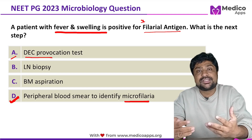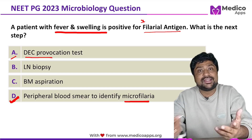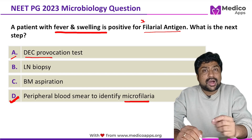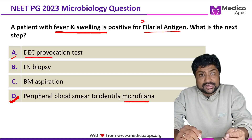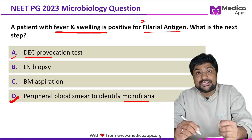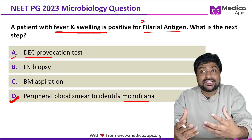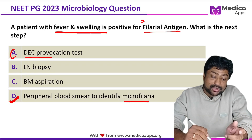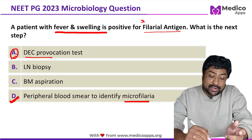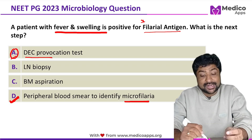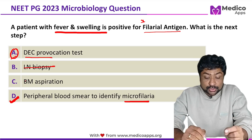Now we have much more sensitive and specific antigen tests, so DEC provocation test is hardly done anymore. But because it is mentioned so much in textbooks, many students went ahead and marked option A, the DEC provocation test.